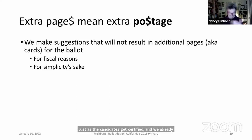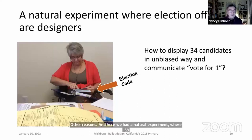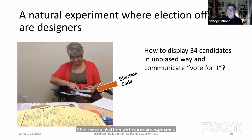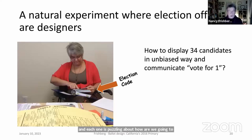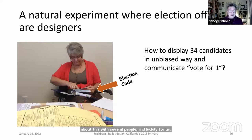Extra pages mean extra postage and other costs. This situation created a natural experiment: 58 different county officials acting as designers, each puzzling over how to display 34 candidate names in an unbiased way and communicate that voters can only select one.